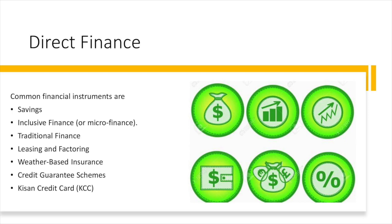The Kisan Credit Card scheme aims to provide adequate and timely institutional credit to farmers with a very simplified and flexible procedure. The scheme is implemented by scheduled commercial banks, regional rural banks, and cooperative banks. It comprises both short-term crop loan and term loan components, which we will be discussing in further slides.